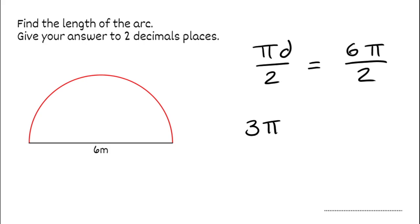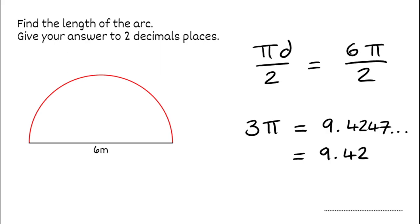We need to give our answer to two decimal places. So if we put 3 pi in the calculator and convert it to a decimal, we get 9.4247. That's enough to round — so to two decimal places this would be 9.42. Using the correct units, because the diameter is in metres, the arc length would also be in metres: 9.42 metres.